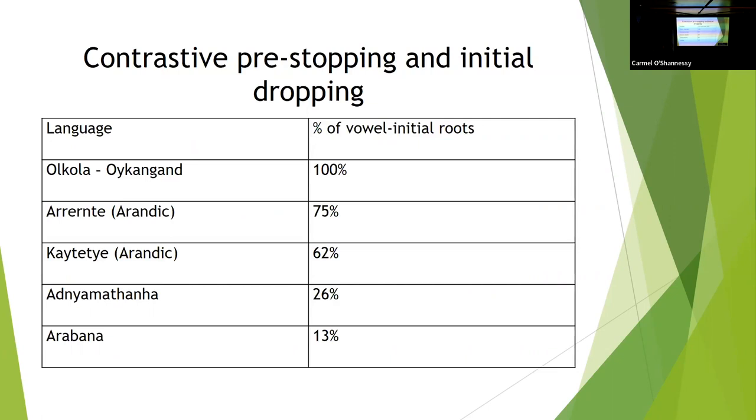Now contrastive pre-stopping and initial dropping vary quite significantly. So, all current, at least in the reliable data, some of the data have no consonant initial groups. They have contrastive pre-stopping and it's gone right through the lexicon. Arunta has 75%, KDH has 62%. Those three all also have pre-stopping in nasal stop clusters. So you get Arunta. In Arunta and Arunda, you do not get that. So pre-stopping does not develop if the nasal is in a cluster in Arunda or in Arunta. And indeed any of the other languages of South Australia, none of them have pre-stopped clusters.